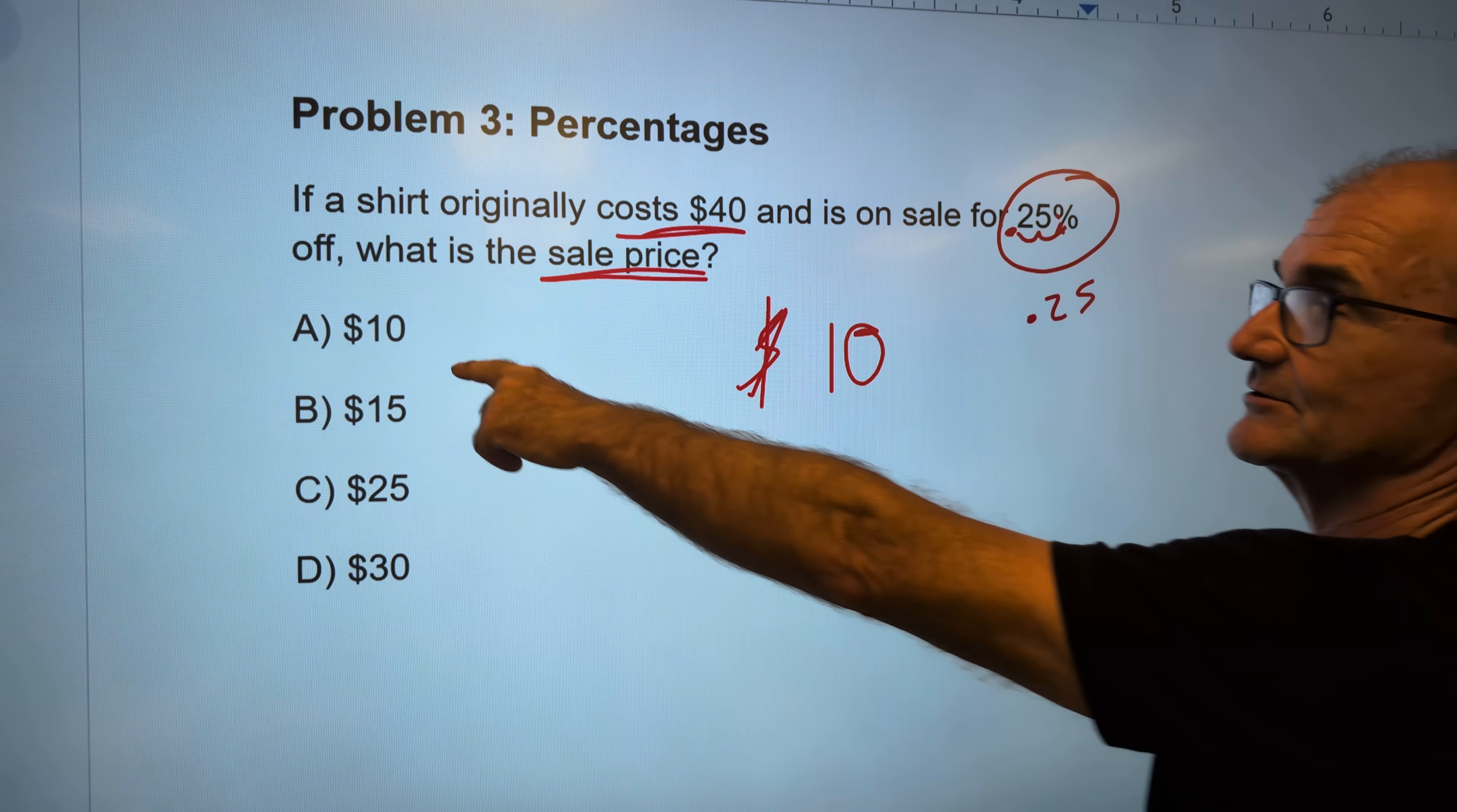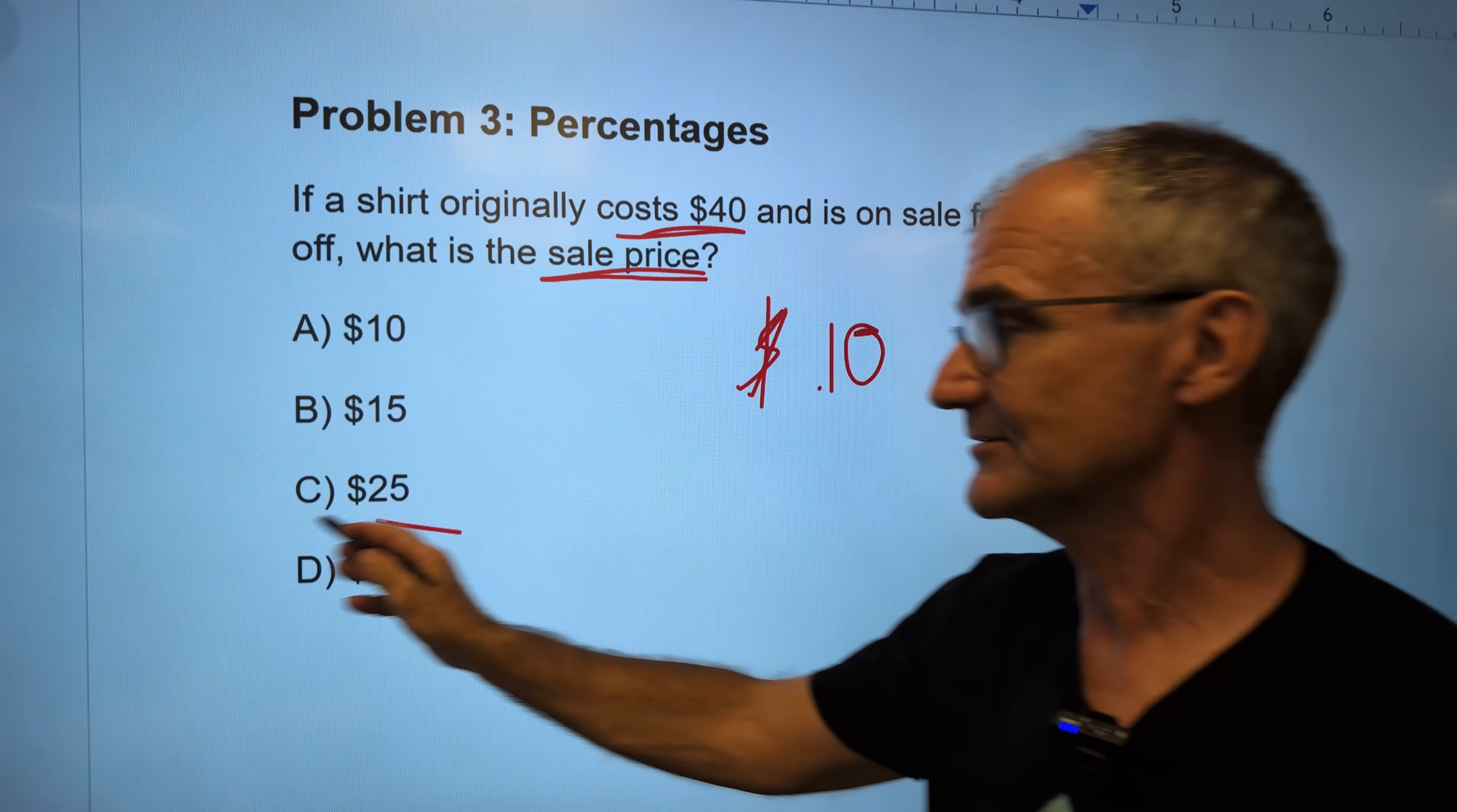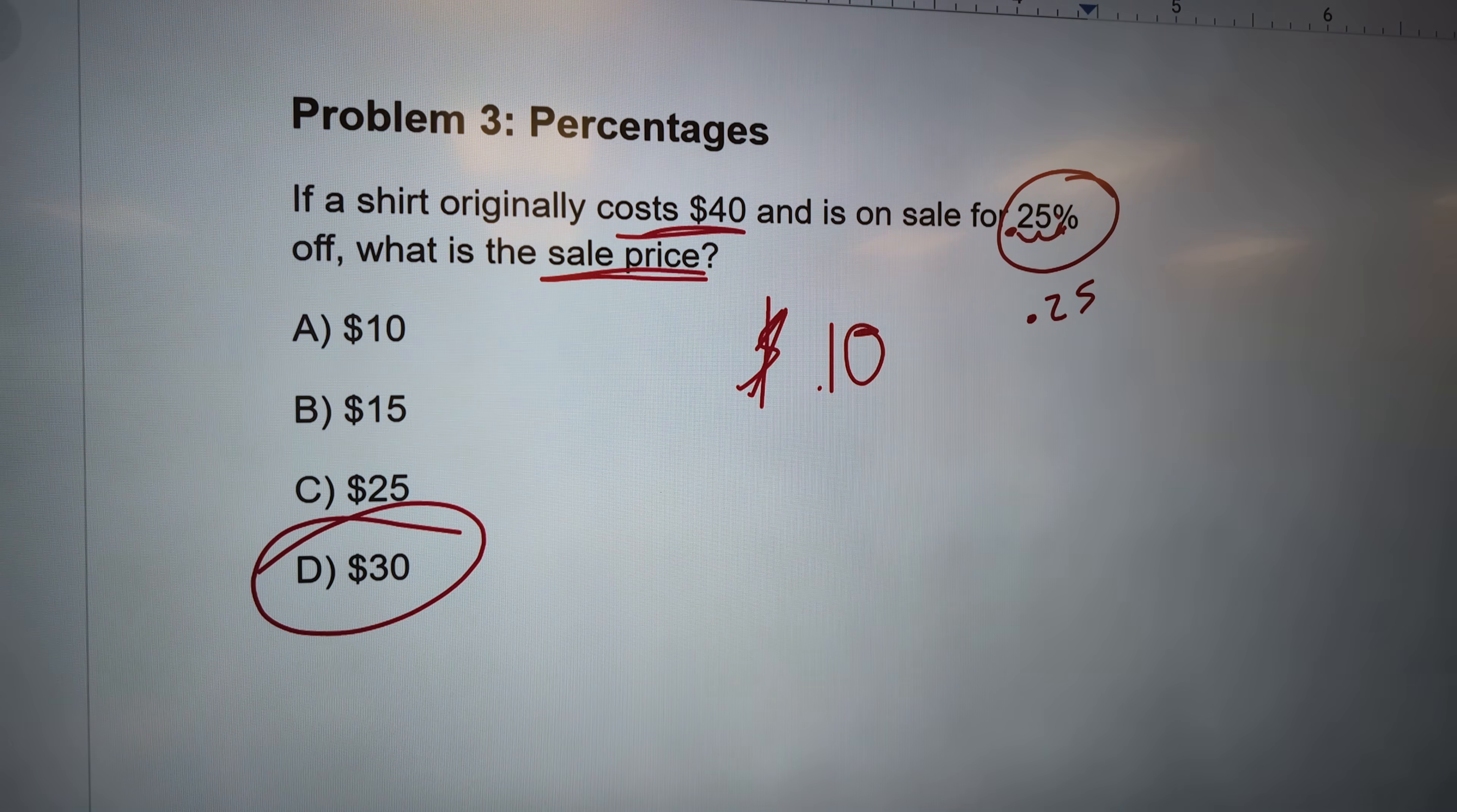So you naturally want to grab answer A. That is a wrong answer. It is saying what is the sale price? Well, you do 40 minus the discount 10 to get a correct answer. Answer D right there. Not only do you need to know the math, you've got to read pretty thoroughly as well. If you're not getting these right, practice, practice, practice. All right. Let's move on to another one.